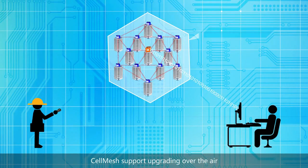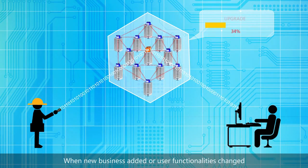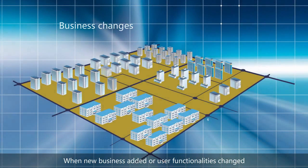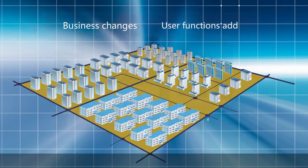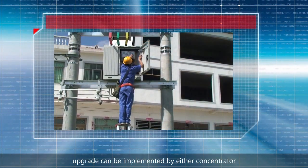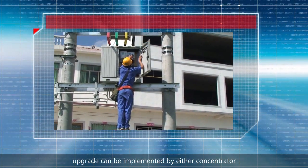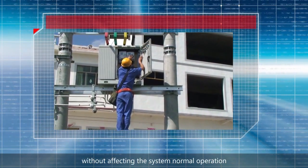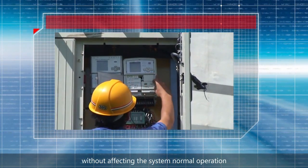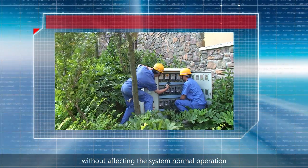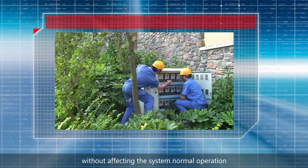CELL MESH supports upgrading over the air when new business is added or user functionalities are changed. Upgrades can be implemented via a concentrator, upgrade platform, or hand-held device without affecting normal system operation.